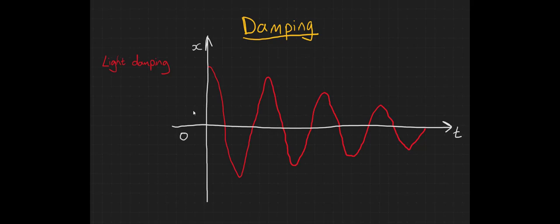You should also be aware of two other types of damping. Critical damping is where the friction is high enough that the system returns to equilibrium as quickly as possible, but without overshooting.